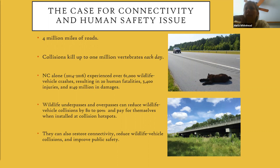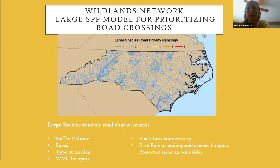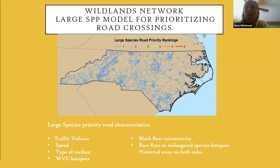Wildlife crossings can restore connectivity, reduce wildlife-vehicle collisions, and improve public safety. The Wildlands Network mapped roads and created a model to prioritize where road crossings for wildlife should be placed. Factors considered included traffic volume (annual average daily traffic), speed limit, and the type of median along roads—injury barriers, guardrails, and other barriers that inhibit movement of animals across the road.